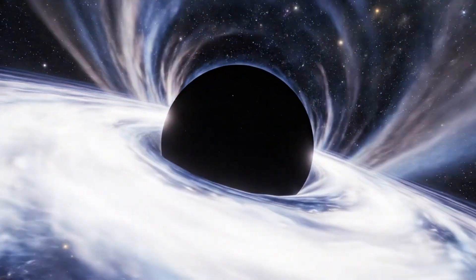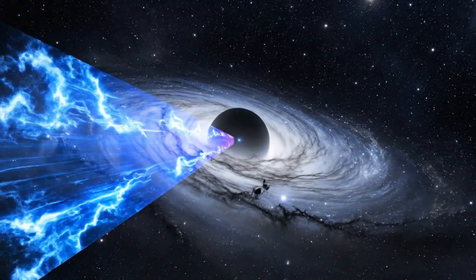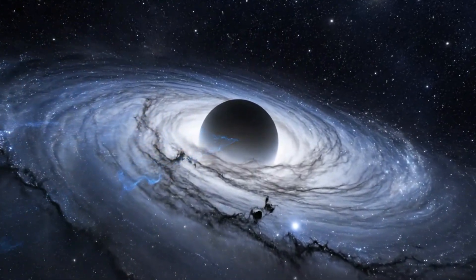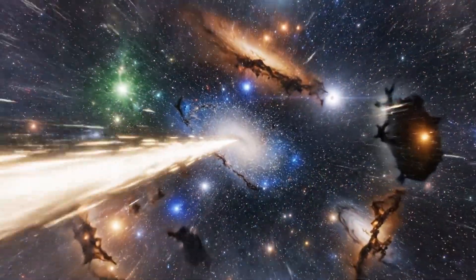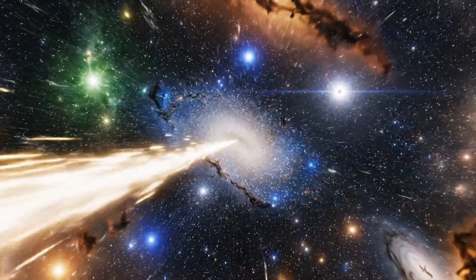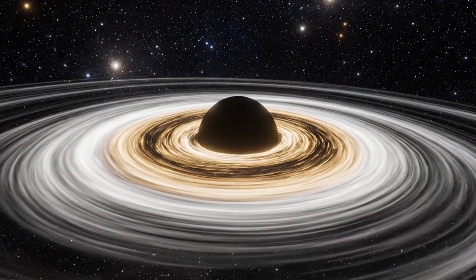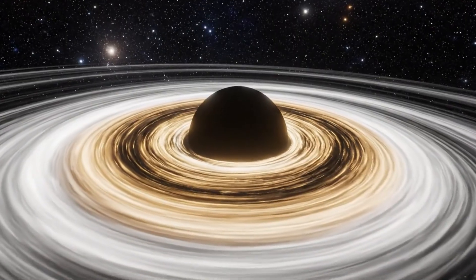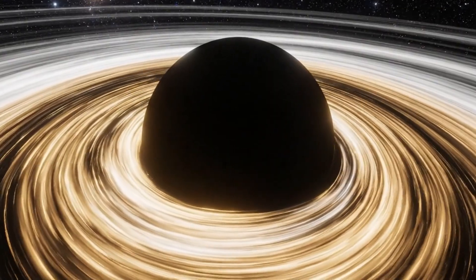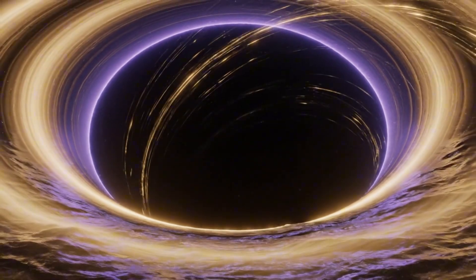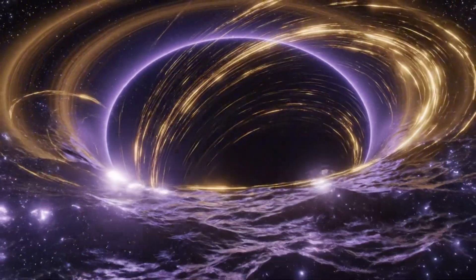TON 618 radiates with a power that outshines 100 trillion suns, which is a number so large the mind has no natural place to store it. NASA describes it simply but devastatingly: if this object were placed inside the Milky Way, its glow would overpower every star combined, turning the night sky into a washed out canvas of white light. From Earth, its brilliance would be 23 times brighter than the full moon, which means no constellation would survive, and every star we have ever mapped would disappear behind a wall of light coming from a single distant point.